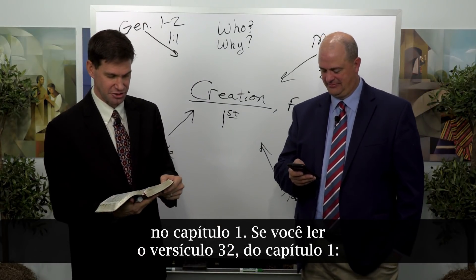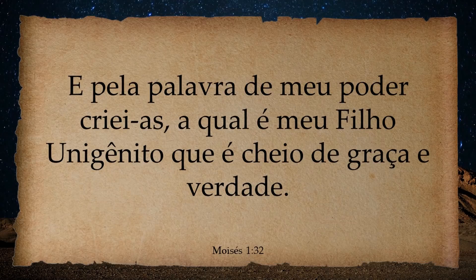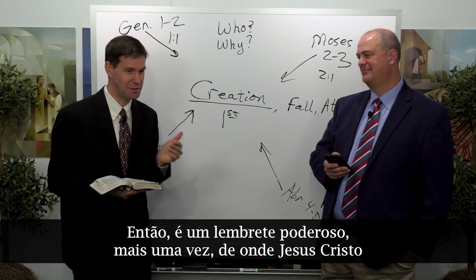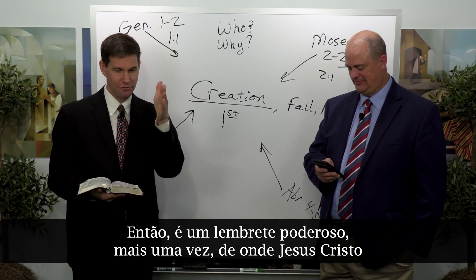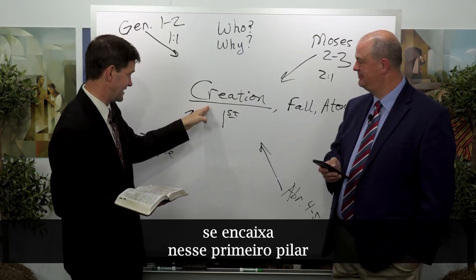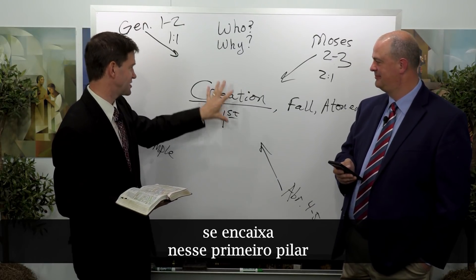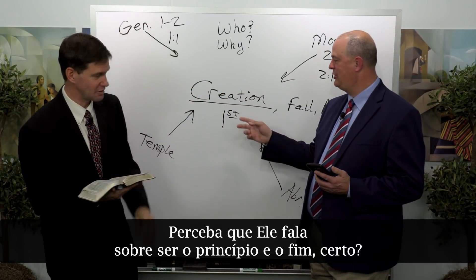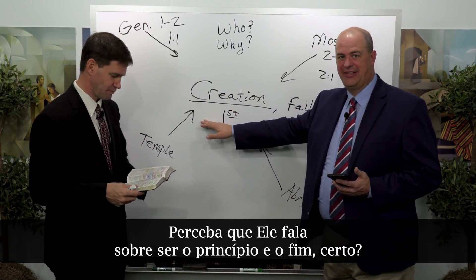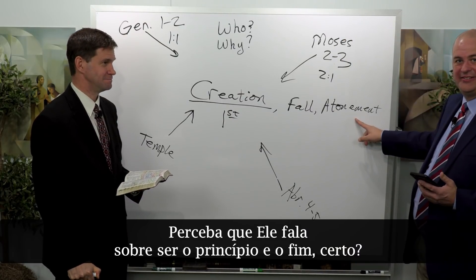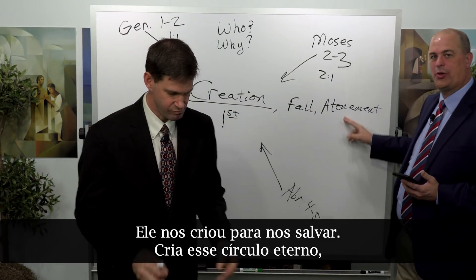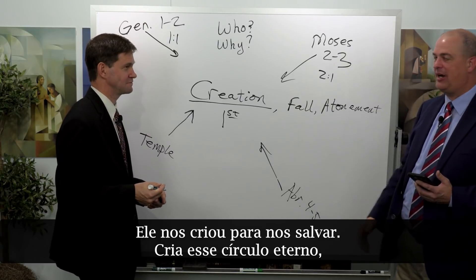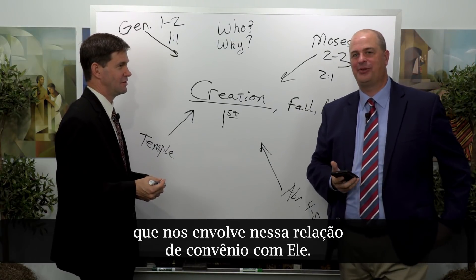If you read verse 32 back in chapter 1: 'By the word of my power have I created these worlds without number, which is mine only begotten Son.' It's a powerful reminder of where Jesus Christ fits in this first pillar of the plan of our Heavenly Father. He talks about being the beginning and the end — he creates this in order to save us, to create this one eternal round where we're wrapped into this covenantal relationship with him.